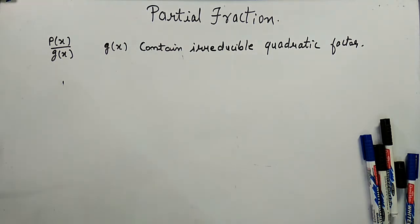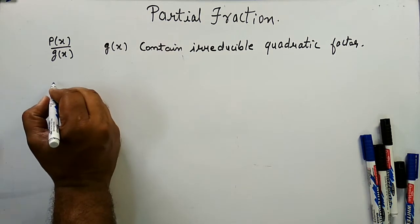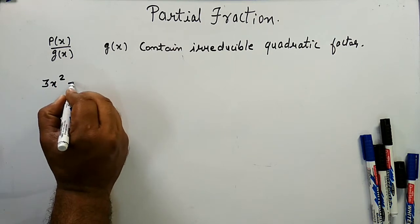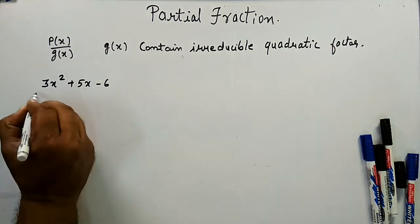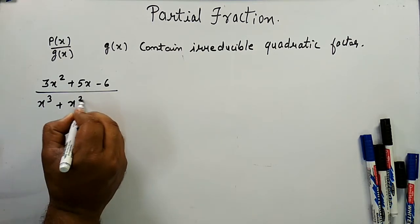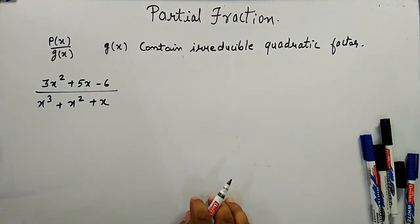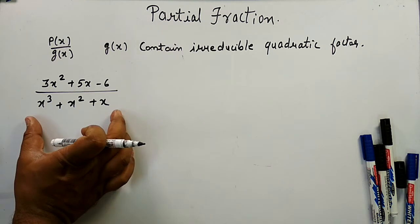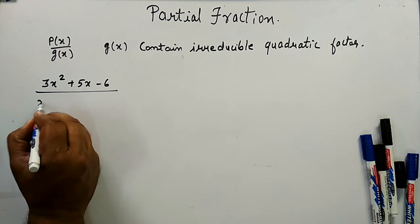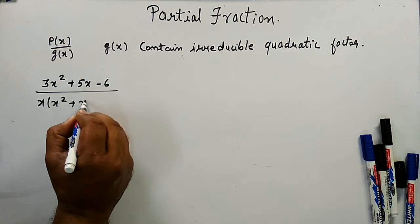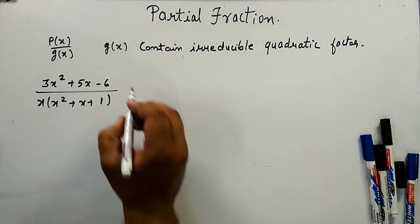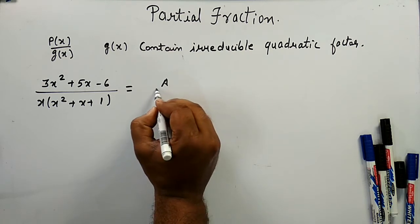The example we are going to solve is the partial fraction of (3x² + 5x - 6) / (x³ + x² + x). Now x³ + x² + x can be written as x(x² + x + 1).